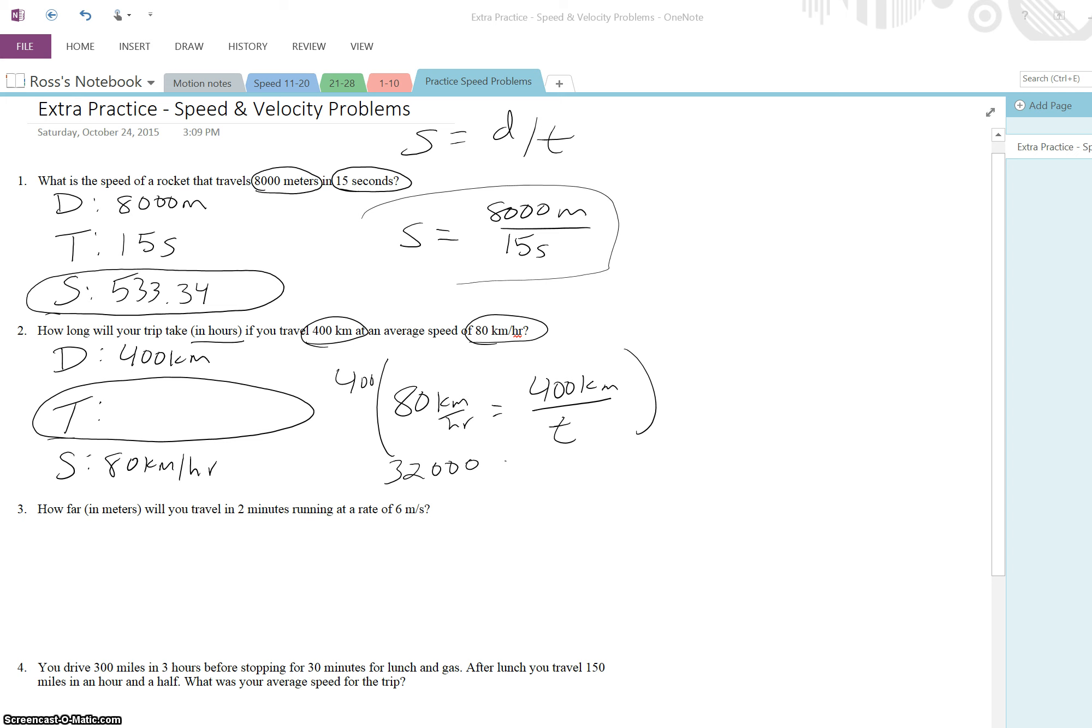In order to get rid of something that's in the denominator, what we need to do is multiply both sides of the equation by T. So we do that. T will cancel out here. We will have 80 kilometers per hour T equals 400 kilometers. Now we can divide both sides by 80. That cancels out. And we're dividing 400 divided by 80, which is five. So we are left with T equals five hours.